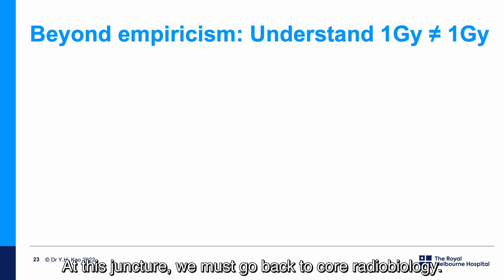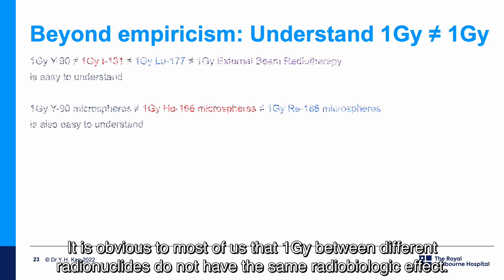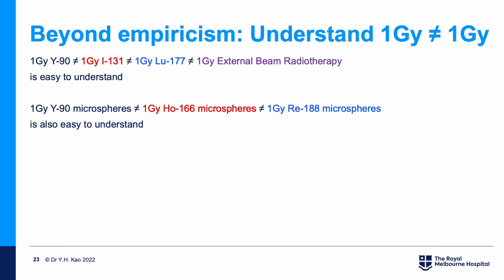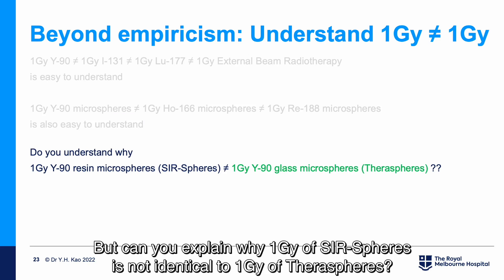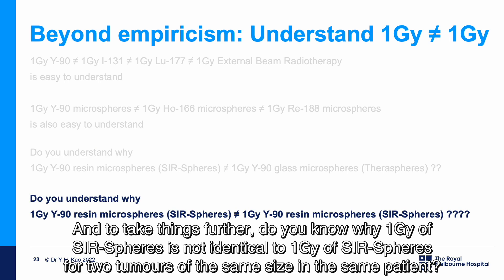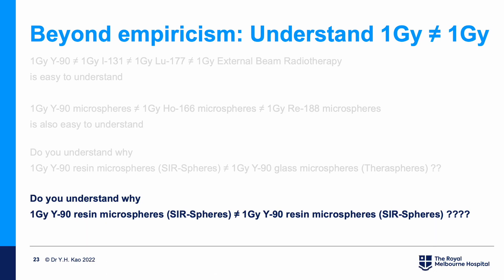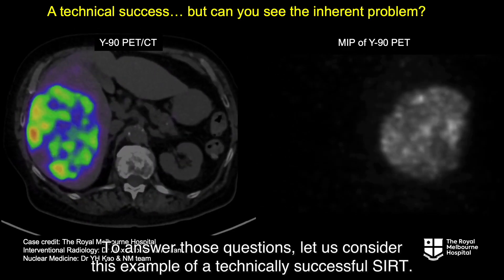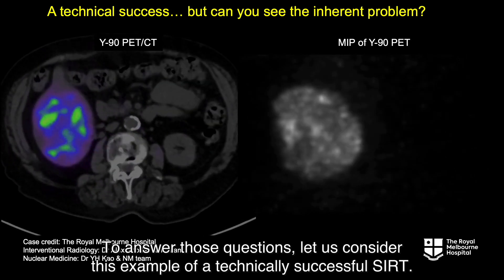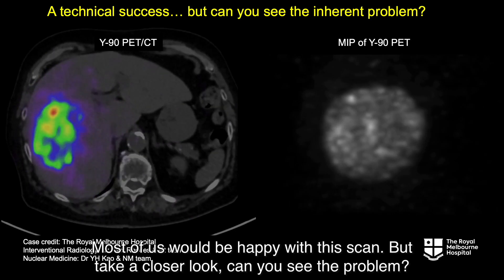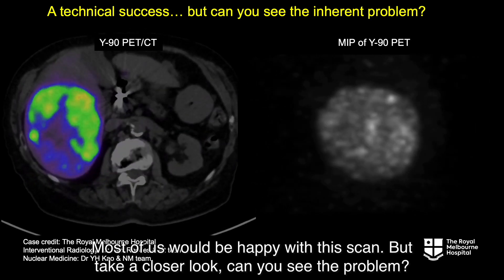At this juncture, we must go back to core radiobiology. It is obvious to most of us that one grey between different radionuclides does not have the same radiobiologic effect. But can you explain why one grey of SIR-spheres is not identical to one grey of TheraSpheres for two tumours of the same size in the same patient? Let us consider this example of a technically successful SIRT. Most of us would be happy with this scan — but take a closer look: can you see the problem?